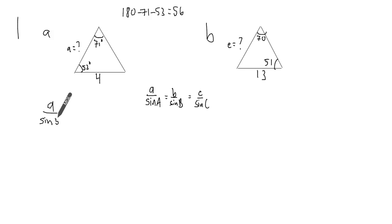So a over sine of 56 is equal to, I'll choose this one here, 4 over its opposite angle, so sine of 71. If we knew this length, we could have done this one, but we don't, so we won't.